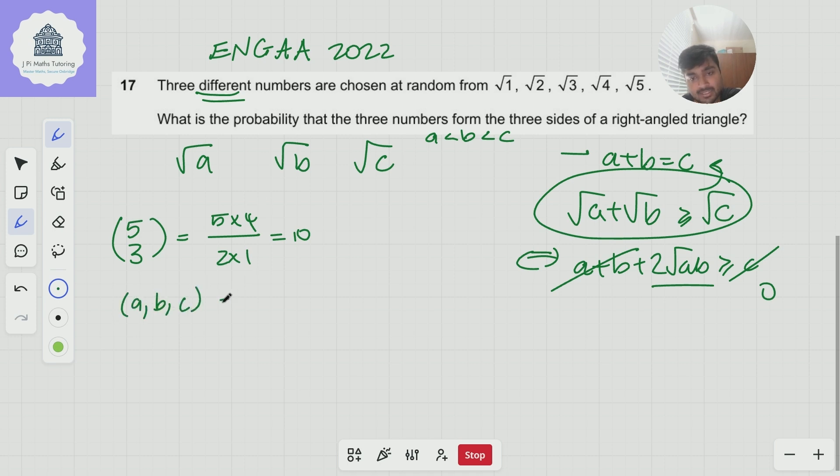So a b c one possibility is one two three another possibility is one three four another possibility is one four five. So these are the only possibilities where a is one. Okay what if we make a now two and now there's only one possibility if a is two b has to be strictly bigger than a so it would have to be at least three.